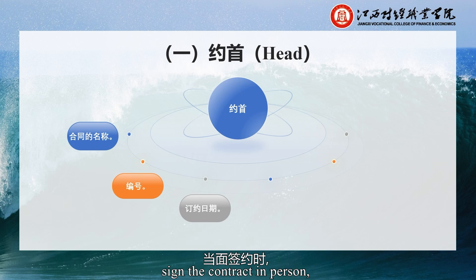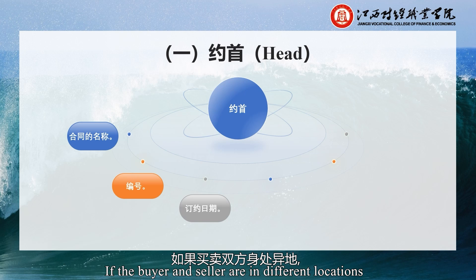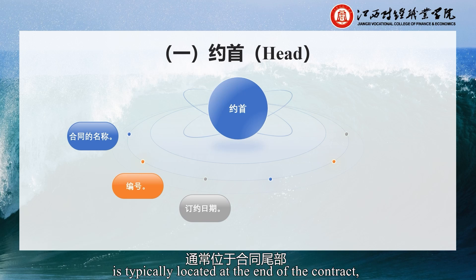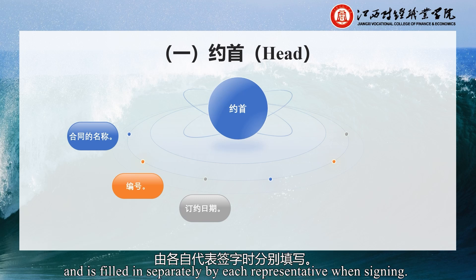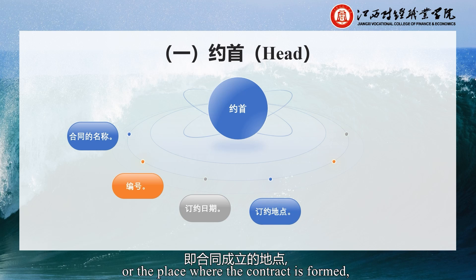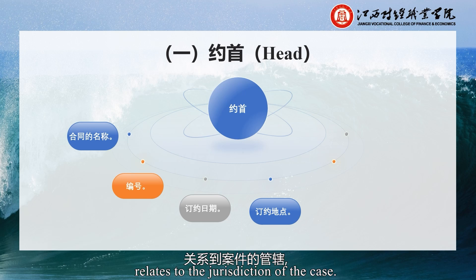When the buyer and seller sign the contract in person, the date of contract execution is usually located in the upper right corner of the contract. If the buyer and seller are in different locations and the contract is signed sequentially by mail, the date of contract execution is typically located at the end of the contract, where the signatures of both parties are affixed, and is filled in separately by each representative when signing. Fourth, the Place of Contract Execution refers to the location where the contract drafting process is completed. The place where the contract is formed relates to the jurisdiction of the case, which is very crucial.